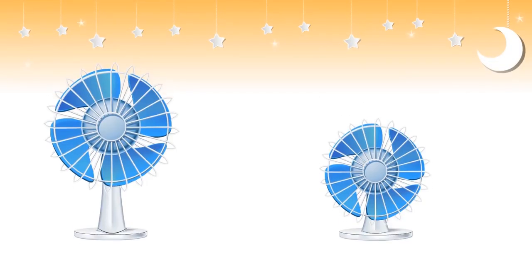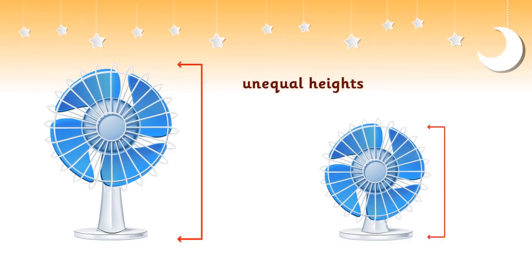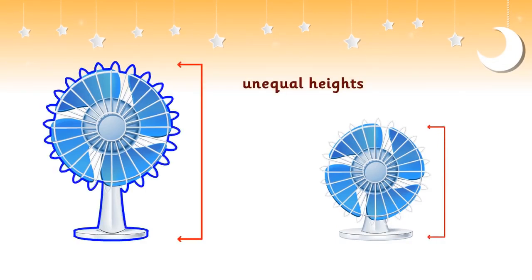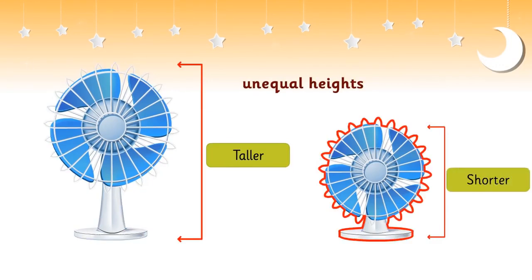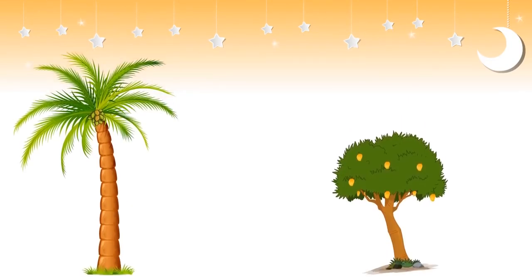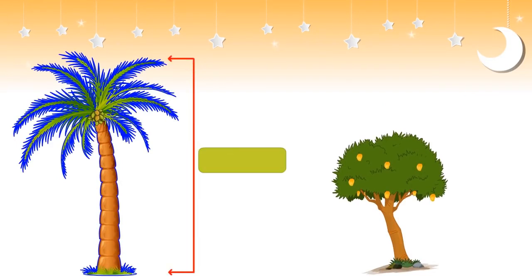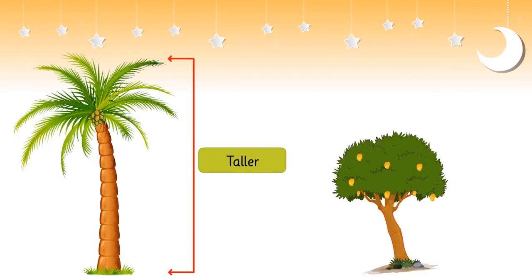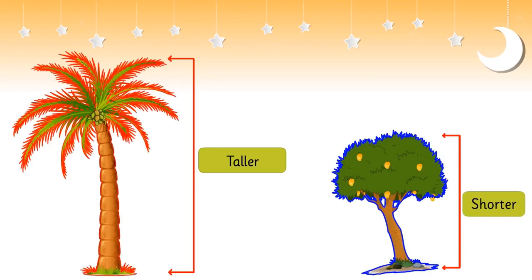When we have two objects of unequal heights, we say one object is taller and the other one is shorter. For example, here the coconut tree is taller than the mango tree. Or we can say that the mango tree is shorter than the coconut tree.